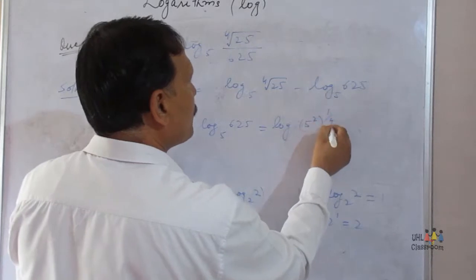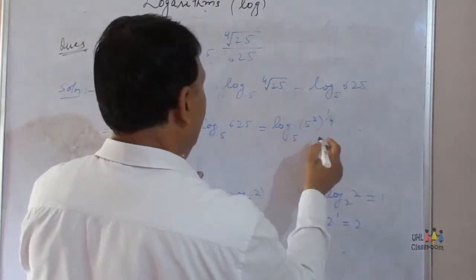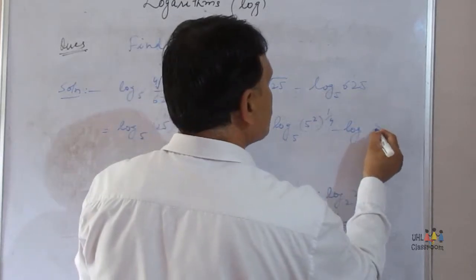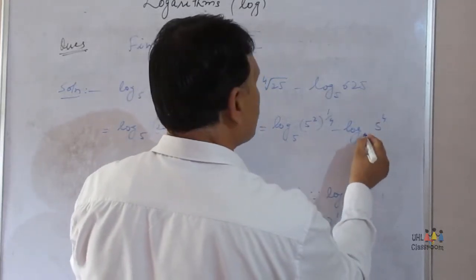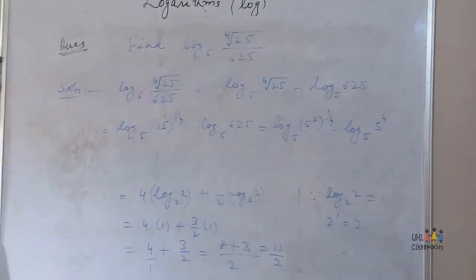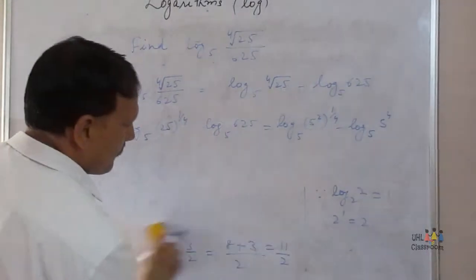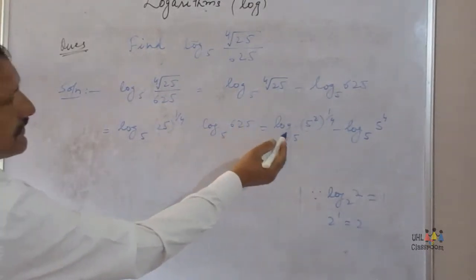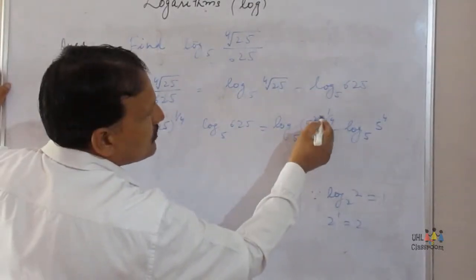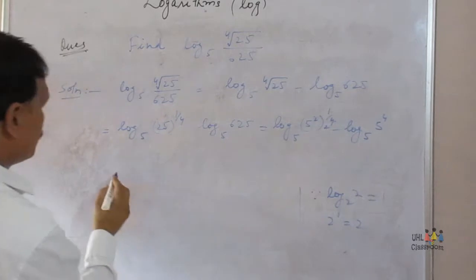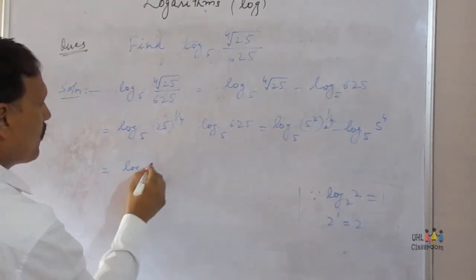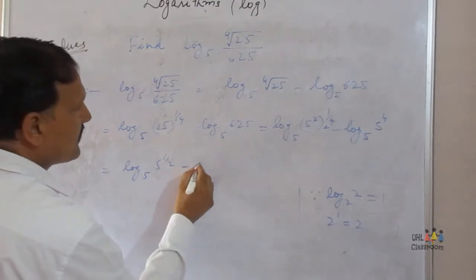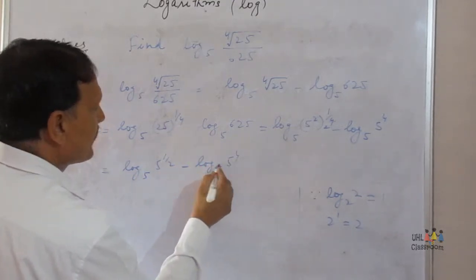Now 25 can be written as 5 squared raised to 1 by 4, to the base 5, and 625 can be written as 5 raised to the power 4, to the base 5. Simplifying 5 squared raised to 1 by 4 gives 5 raised to 1 by 2, so we have log of 5 raised to 1 by 2 to the base 5, minus log of 5 raised to 4 to the base 5.